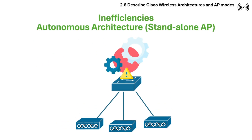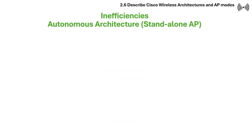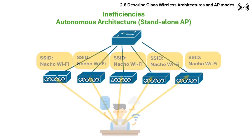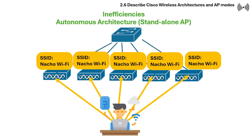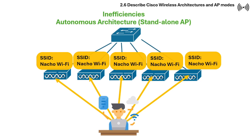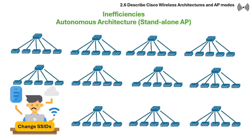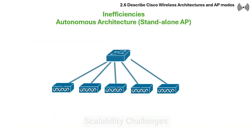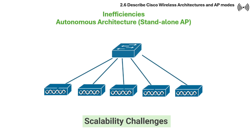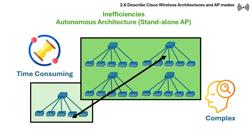Autonomous architecture also has disadvantages. First is no centralized management — since each access point operates independently, they must be configured one by one. If an admin wants to change the SSIDs and other settings, they have to be manually configured on all access points. Imagine managing hundreds of access points manually; it can be cumbersome and complex. Next is scalability challenges — managing a large number of individual access points is time-consuming and requires more manual configuration compared to controller-based architectures.